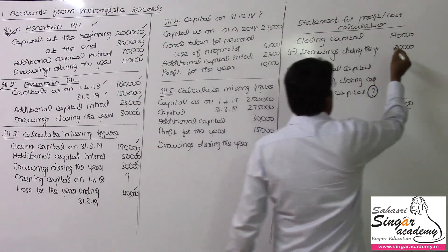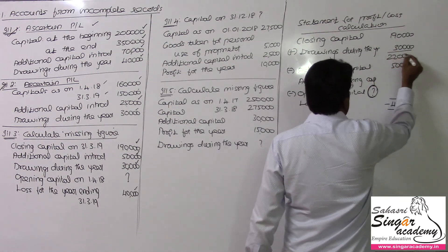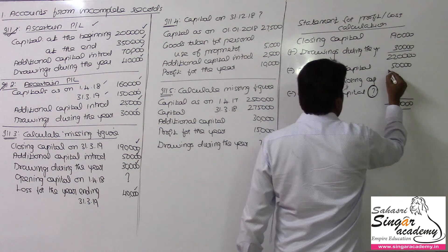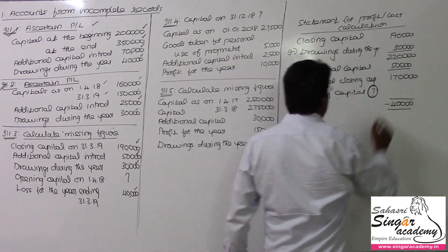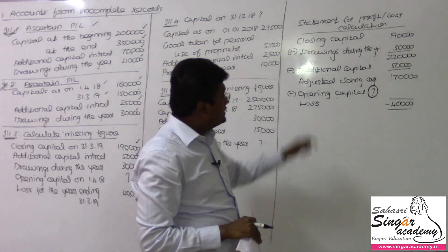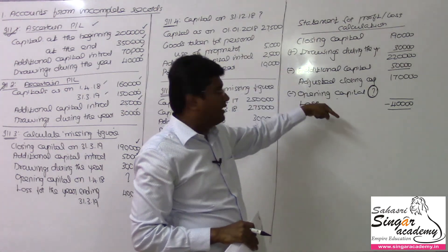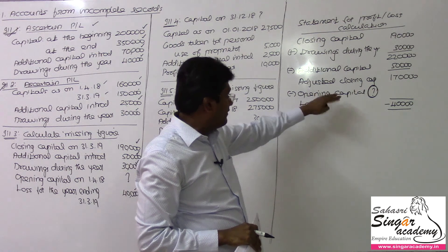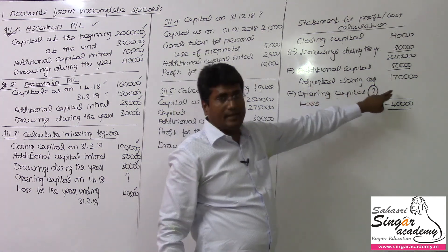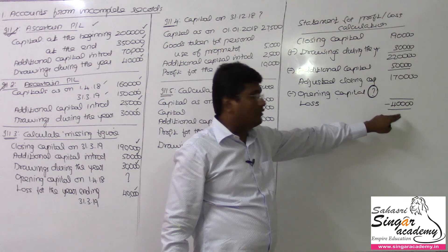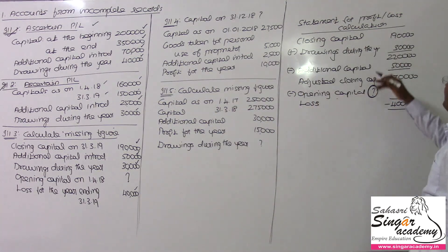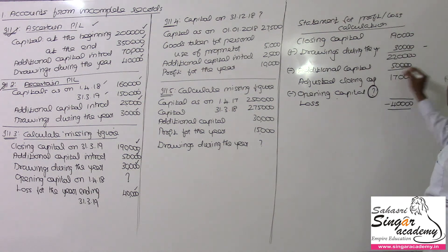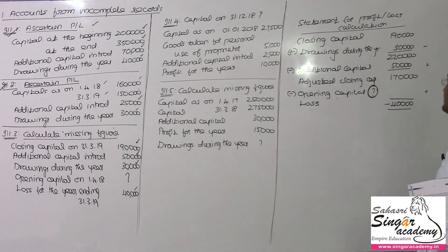So, 190 plus 30 gives 2 lakhs 20. Then 2 lakhs 20 minus 50 gives 1 lakh 70. Opening capital — sorry, opening capital is 1 lakh 40, minus 1 lakh — but it's a loss. Reverse calculate: plus, minus, plus — that is how you can get it.